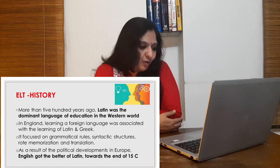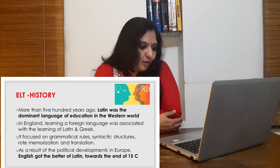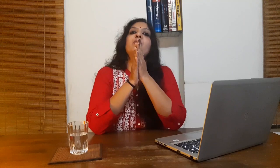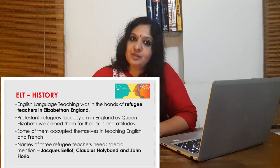As a result of political developments in Europe, English got the better of Latin towards the end of the 15th century. Language teaching began in England towards the end of the Middle Ages, when French died out as a second language of the country. King Henry IV and Henry V of the Tudor dynasty stressed the use of English in the place of French. Early language teachers relied entirely on text and dialogue form, consisting of a series of questions and answers, and learning rested on rote memorization. Protestant refugees took asylum in England as Queen Elizabeth welcomed them for their skills, and some occupied themselves in teaching English and French.